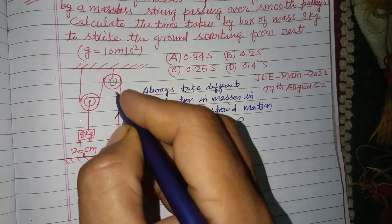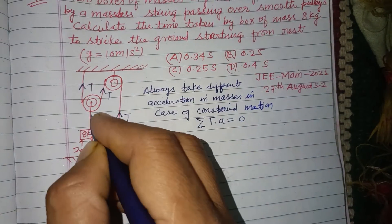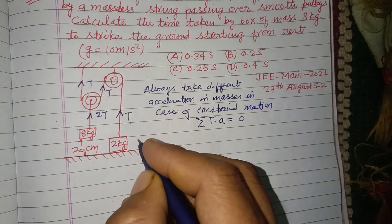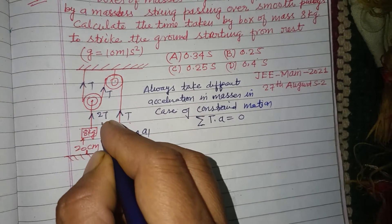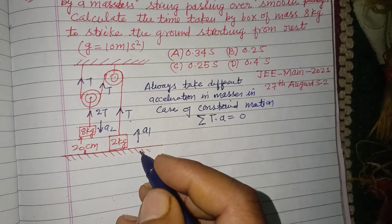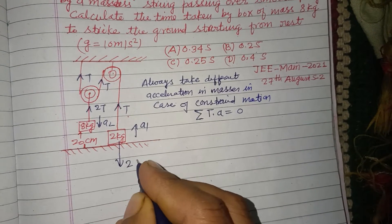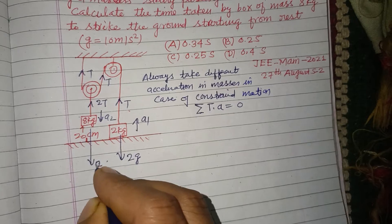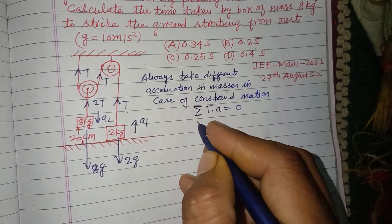The tension in the string: this block has tension T, this block has tension T, and the pulley side has tension 2T. Let the acceleration of the 2 kg block be a1 upward and the acceleration of the 8 kg block be a2 downward. The weight of the 8 kg block acts downward, which is 8g.